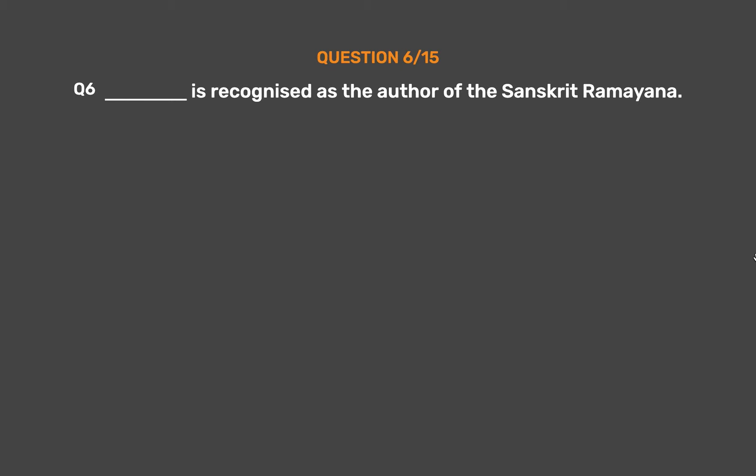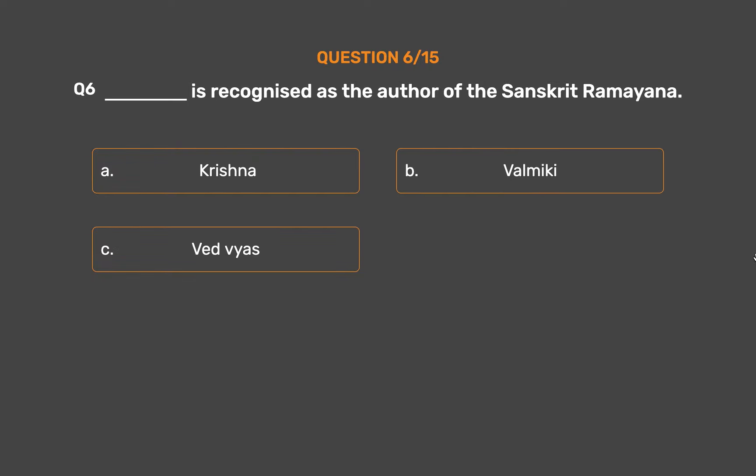Question No. 6. This person is recognized as the author of the Sanskrit Ramayana. Option A: Krishna. Option B: Valmiki. Option C: Vedvyaas. Option D: Valdamir.